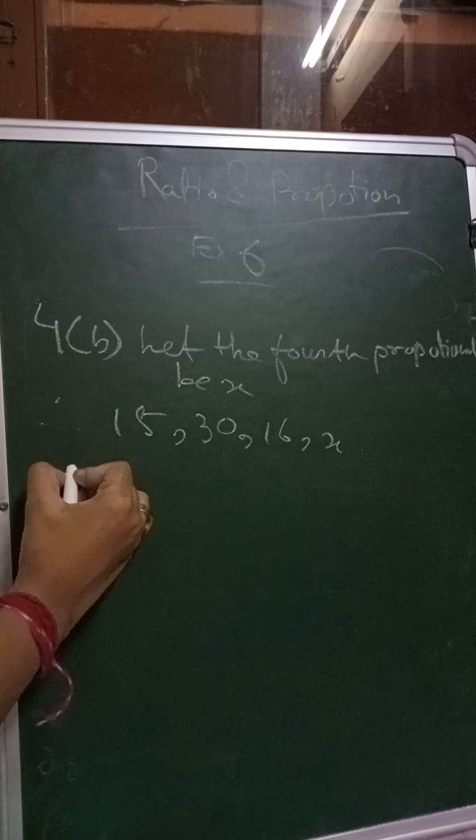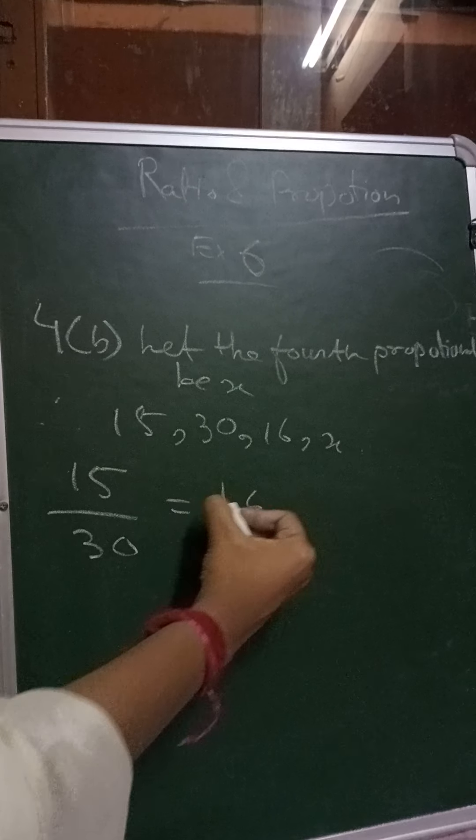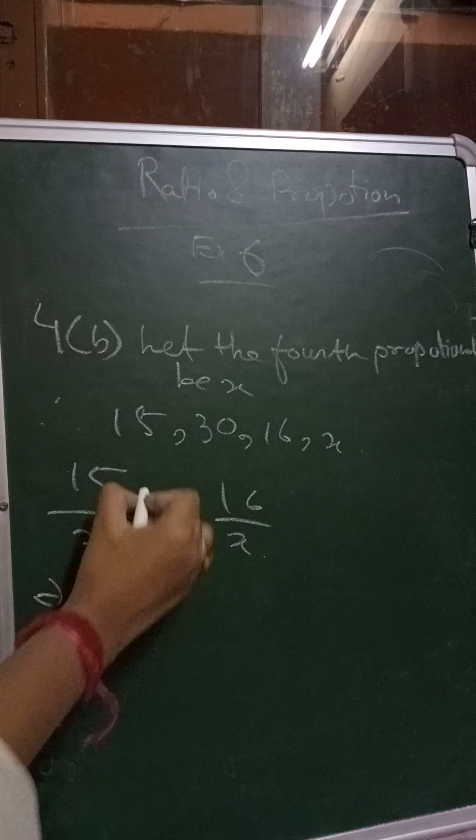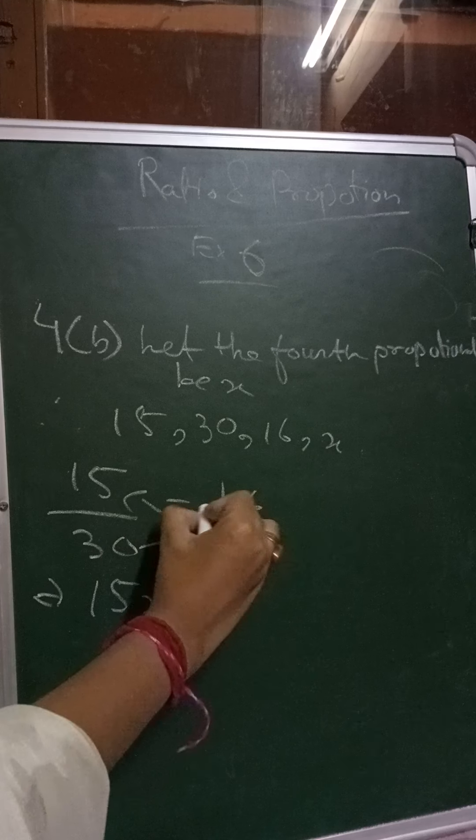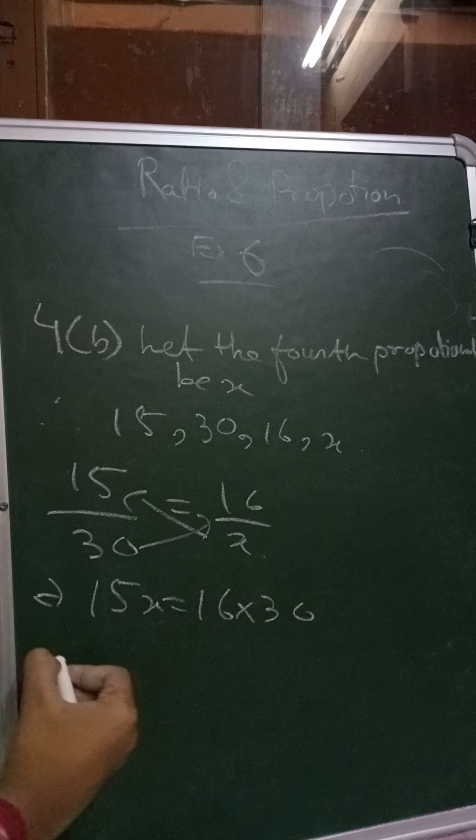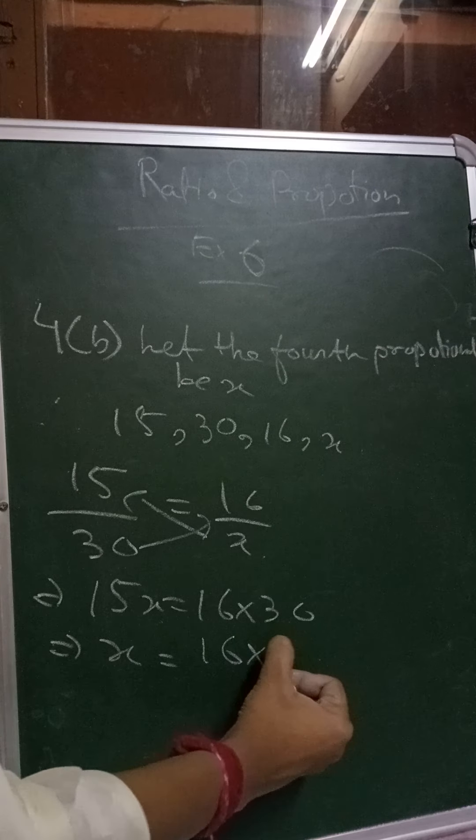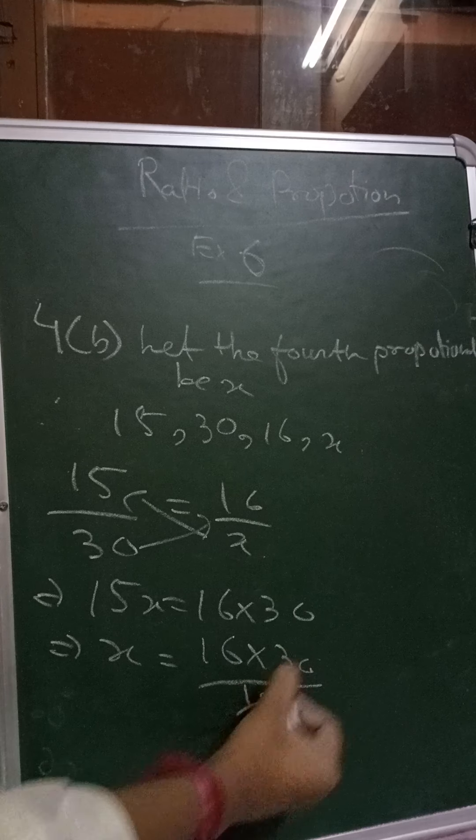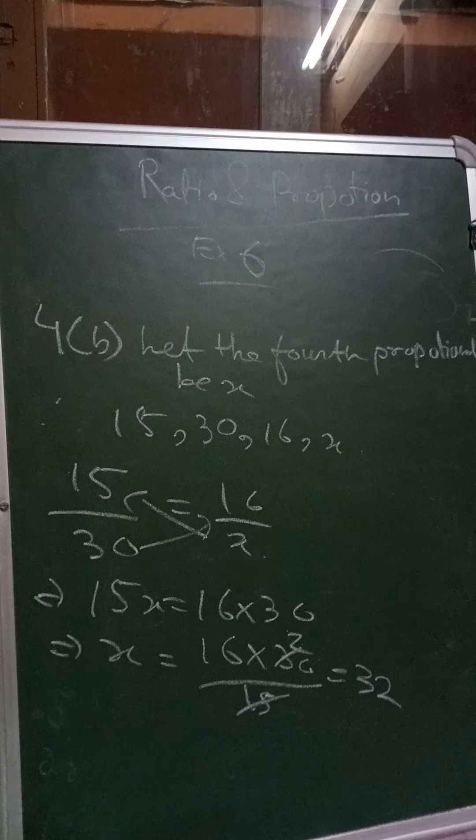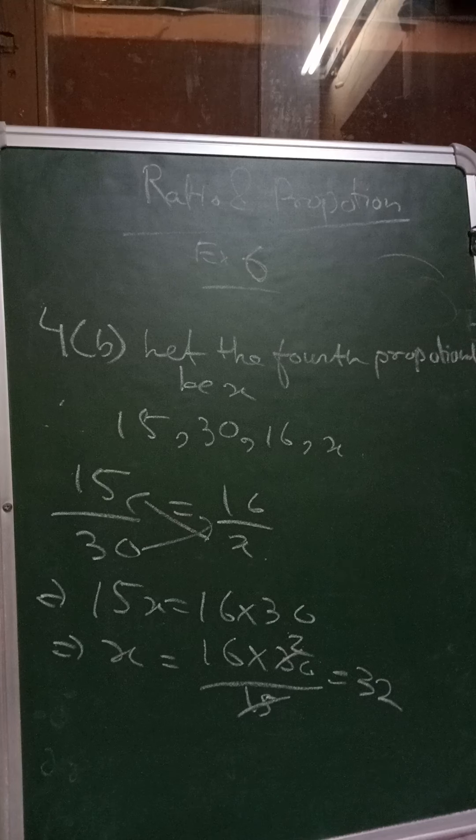So how will I write that? 15 by 30 is equals to 16 by x, right? So this will go here, that is 15x and this will go here, that is 16 into 30. So x will be 16 into 30 by 15 and this will cut and it will become 32. So the value of the fourth proportional is 32.